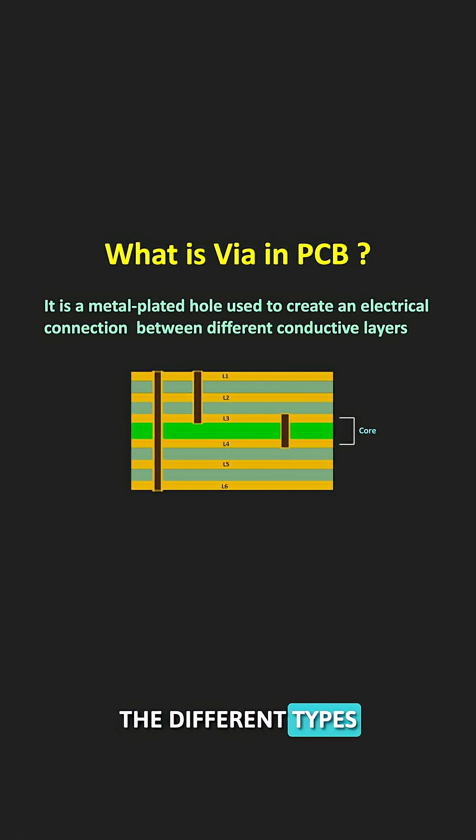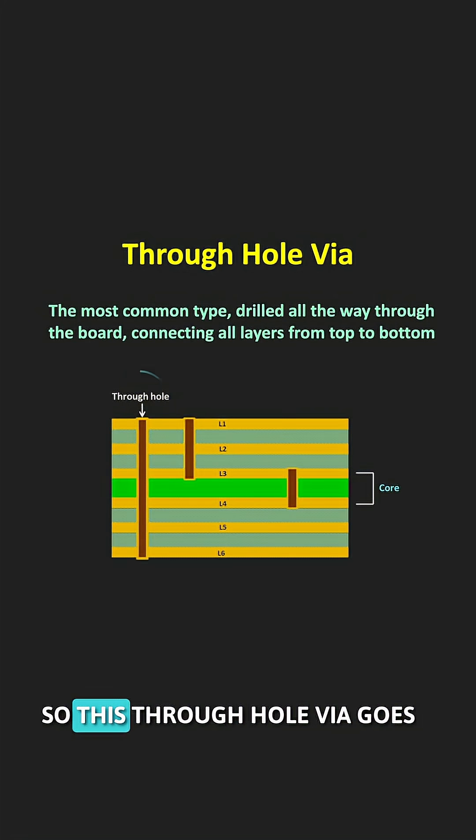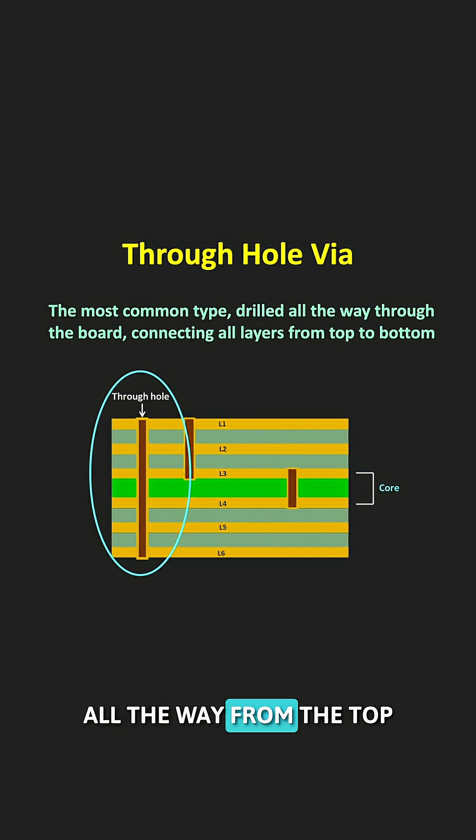Now let us see the different types of Vias in the PCB. The most common one is the through hole Via. This through hole Via goes all the way from the top to bottom layer of the PCB and connects all the layers along the way.